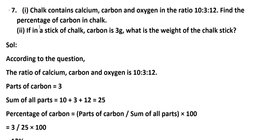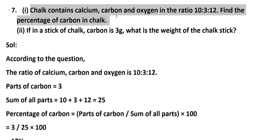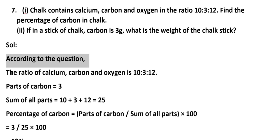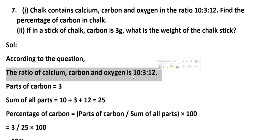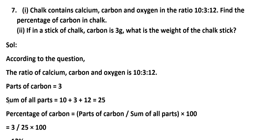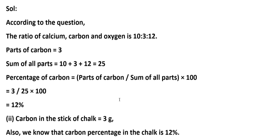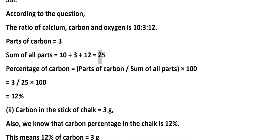Seventh problem: Chalk contains calcium, carbon and oxygen in the ratio 10:3:12. Find the percentage of carbon in the chalk. Solution: Parts of carbon = 3. Sum of all parts = 10+3+12 = 25. Percentage of carbon = (3 ÷ 25) × 100 = 12%. Second part: in a stick of chalk, carbon is 3 grams. What is the total weight of the chalk stick? Since carbon is 12% of the chalk, 12% of total weight Q = 3 grams. So Q = (3 × 100) ÷ 12 = 25 grams.